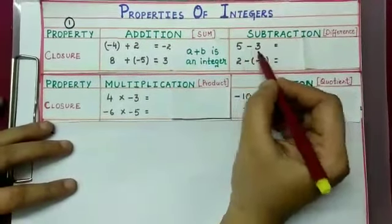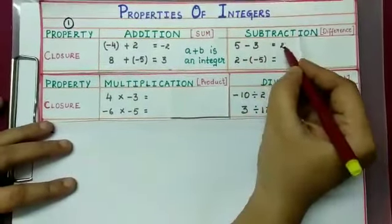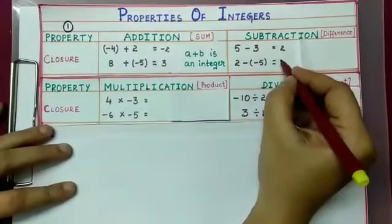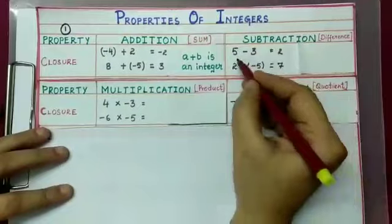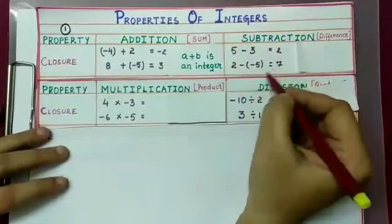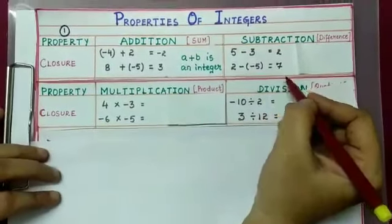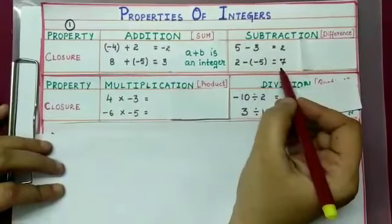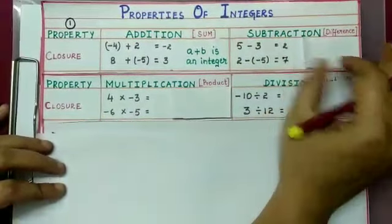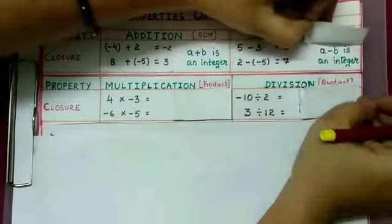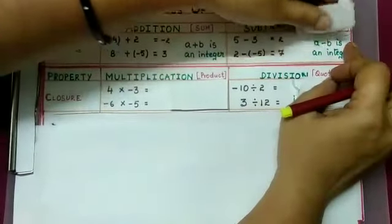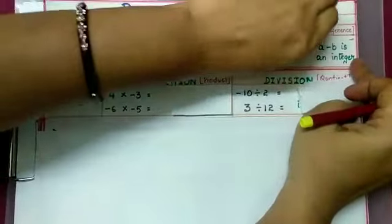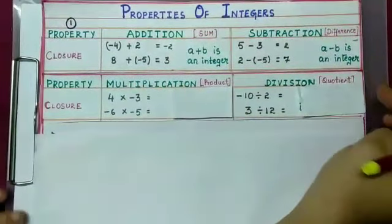Let us check closure under subtraction: 5 minus 3 is 2; 2 minus of minus 5, that is 2 plus 5, which is 7. The difference of two integers is also an integer, so integers follow closure property under subtraction. Generally, if a and b are two integers, a minus b is also an integer.